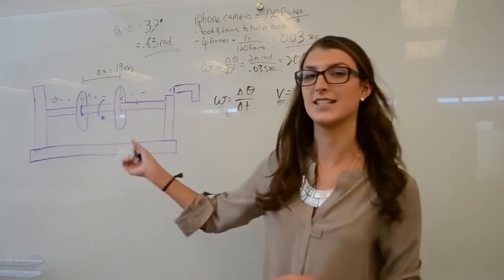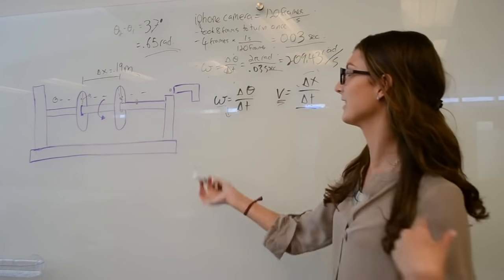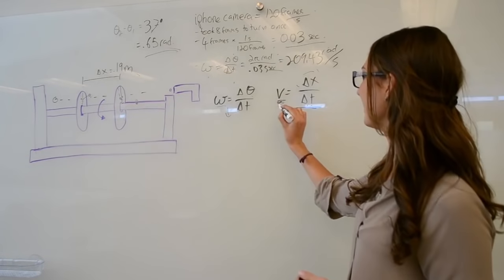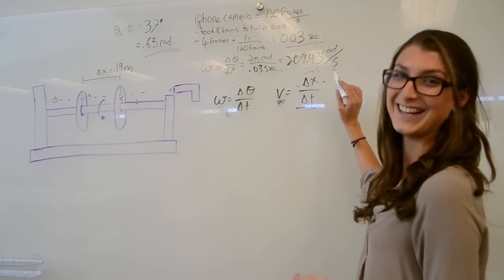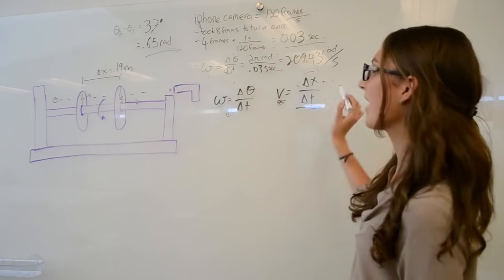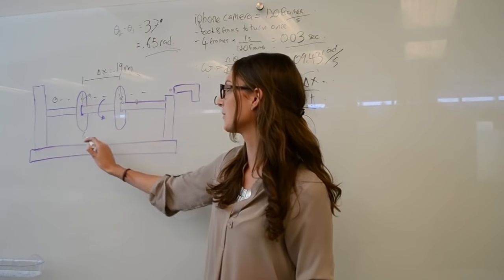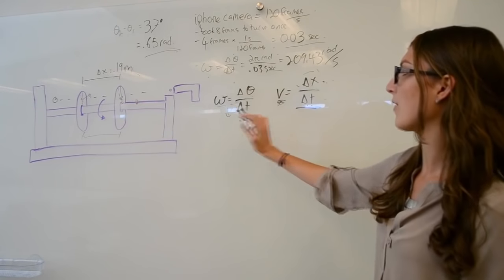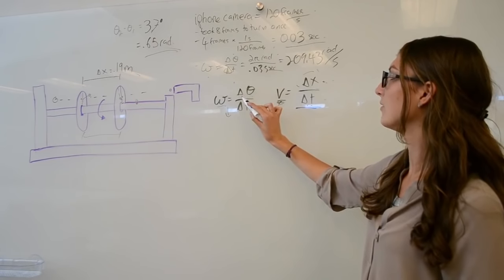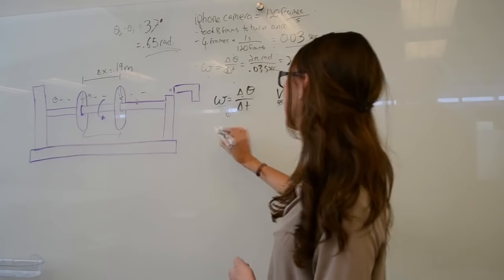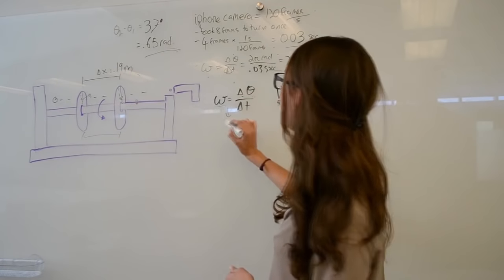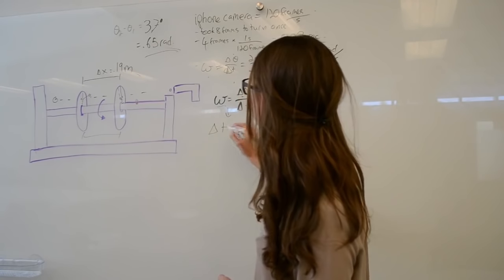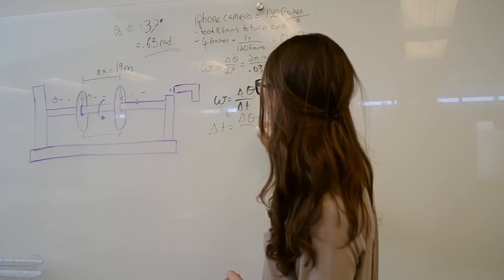We are calculating the velocity of the bullet again using a different mechanism. We're trying to find the velocity, and we know that velocity is equal to delta x over delta t. We have delta x, we know the distance between these two discs. We're trying to find delta t. We know that omega is equal to delta theta over delta t. So we can rearrange this equation to have delta t is equal to delta theta over omega.